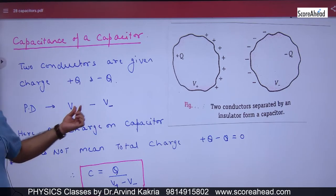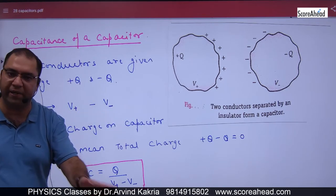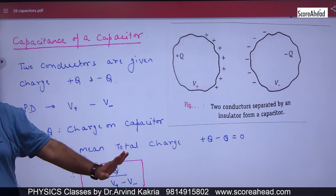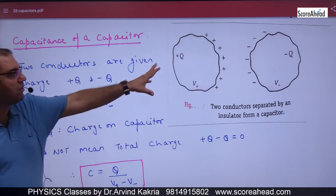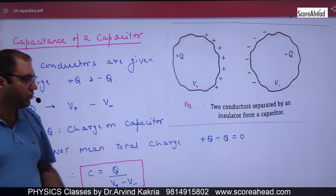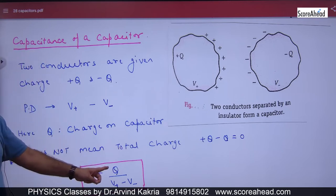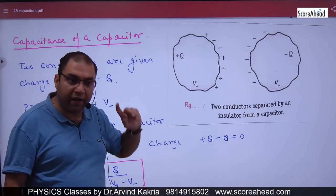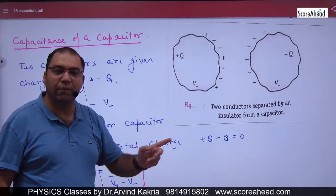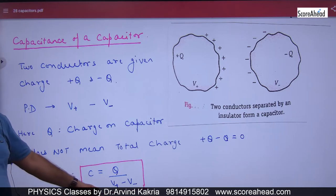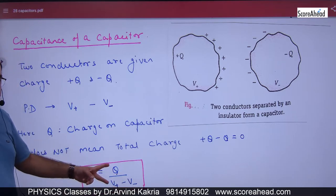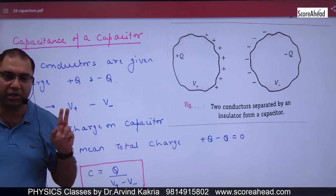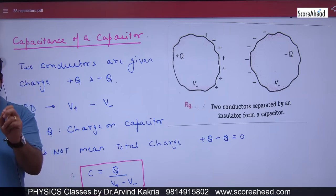So the potential difference is V-plus minus V-minus. Now if you ask what is the capacitance C of this whole system, capacitance equals the charge divided by the potential difference between the two bodies.